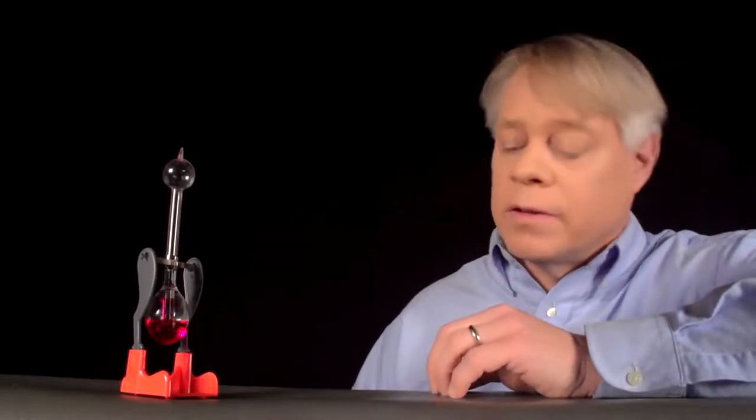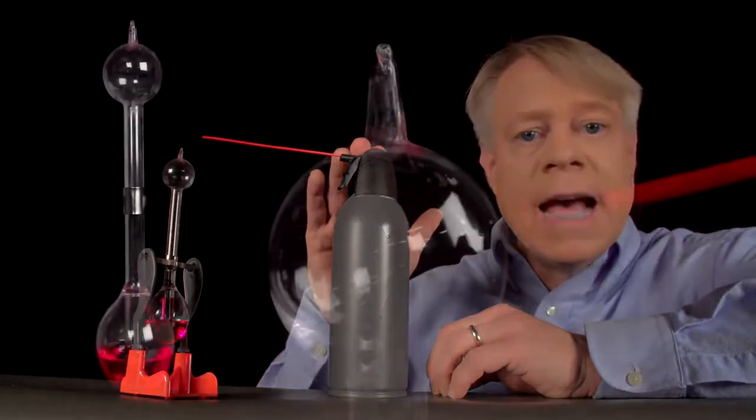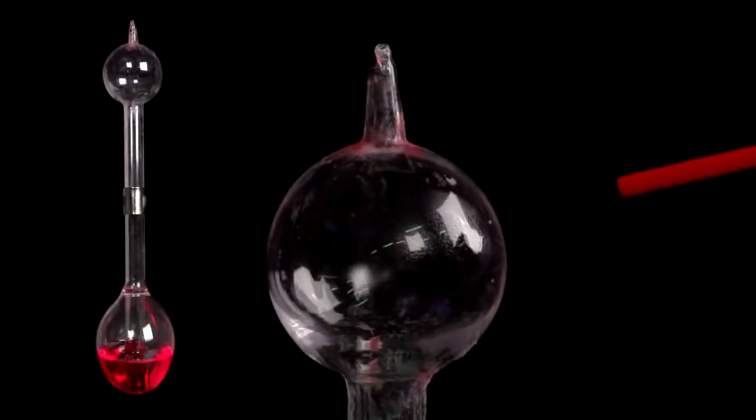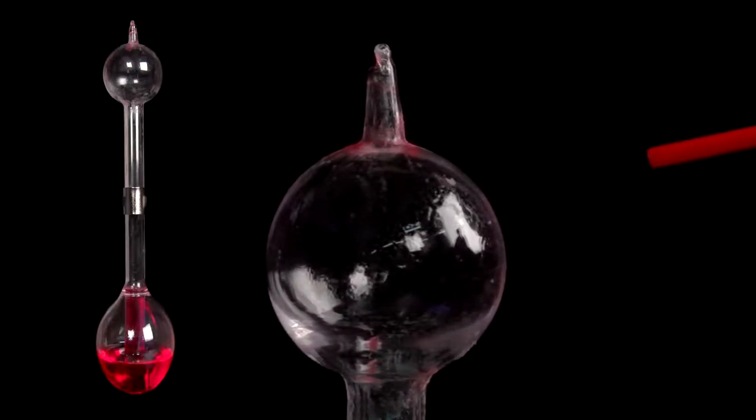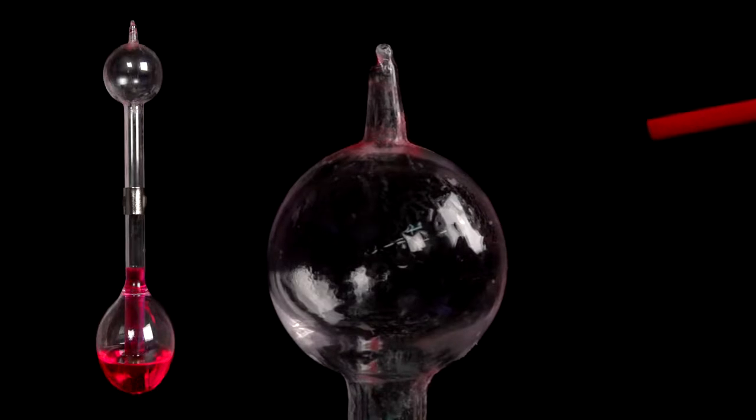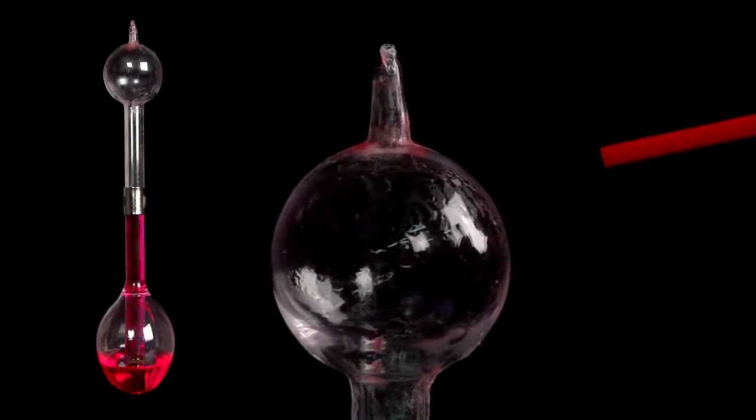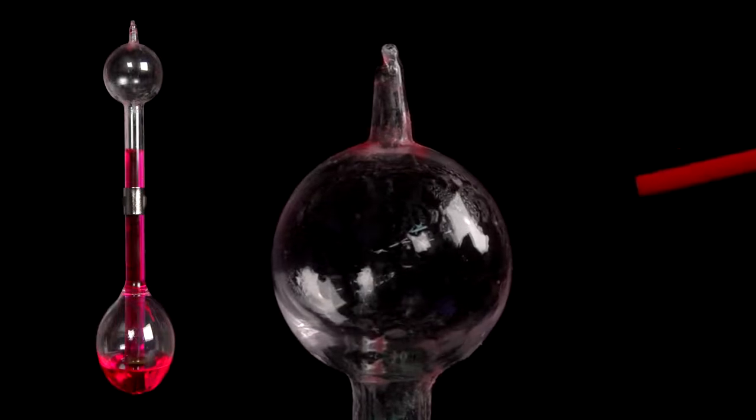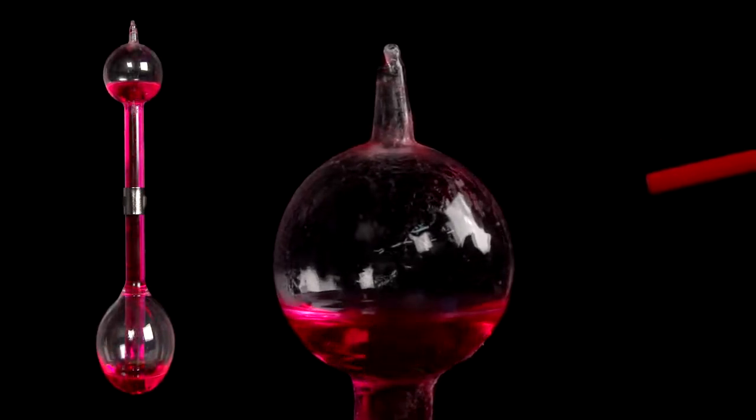You can see the answer if I shoot cool compressed gas across the bird's head. As the cool gas strikes, you see liquid condensing inside the head. And, as you see on the left, this causes the liquid in the base to rise. The cool gas withdraws energy as heat from the head, causing some of the methylene chloride vapor inside to condense, to turn into a liquid. This decreases dramatically the amount of vapor in the head.